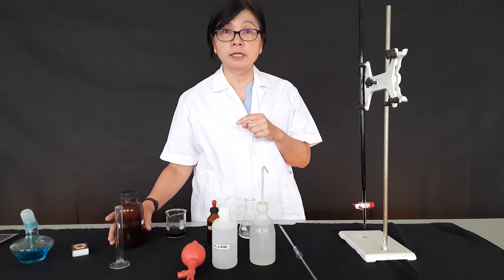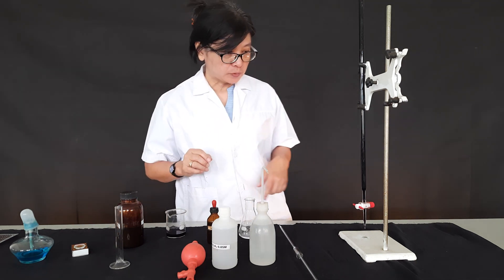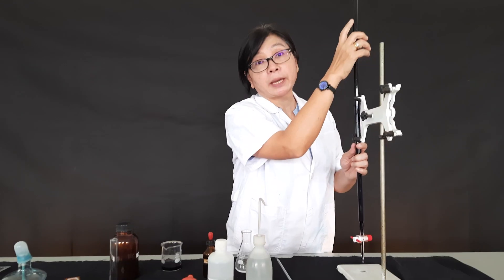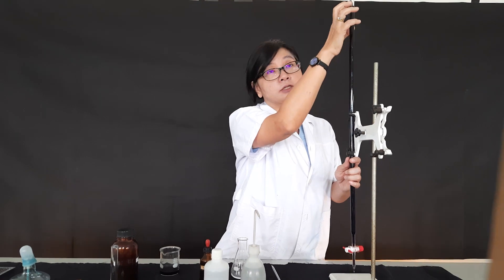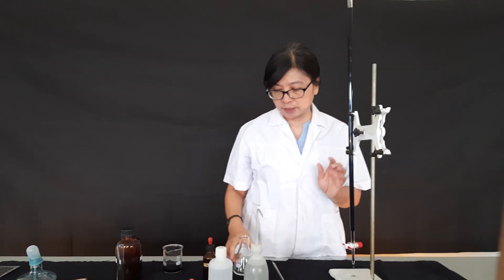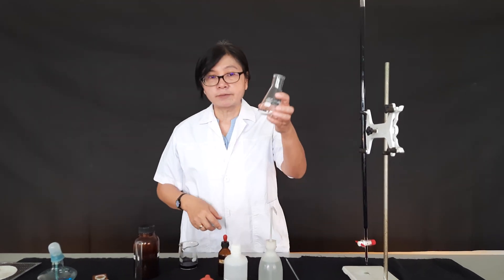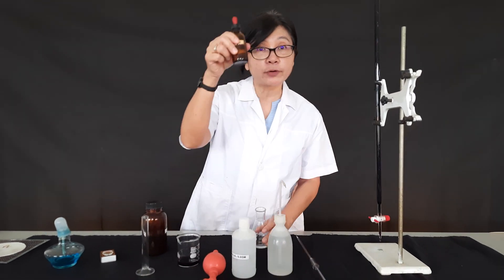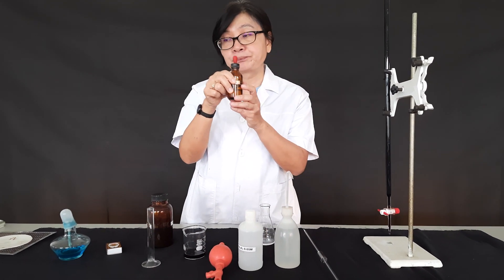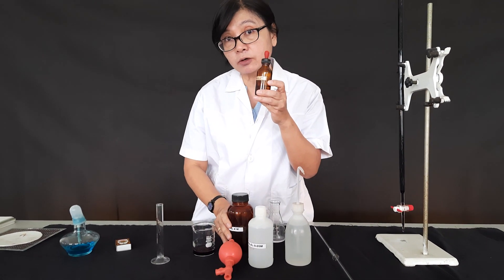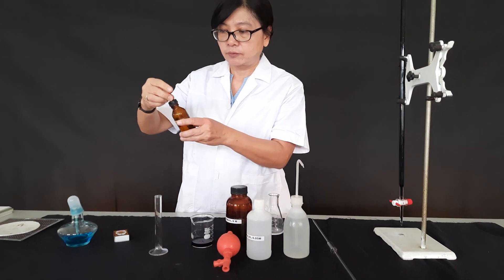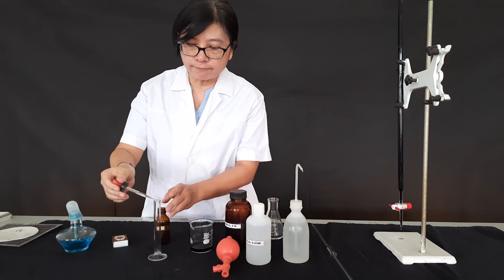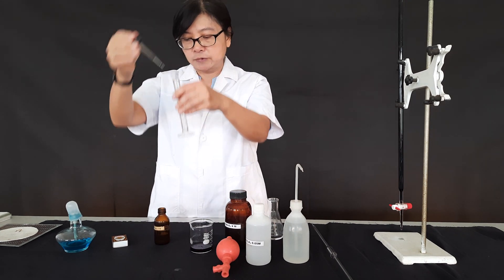I have already filled the burette with the KMnO₄ solution up to the zero line, and I have the oxalic acid solution in the conical flask. Now I want to add sulfuric acid to provide the acidic condition. I need around two and a half cubic centimeters.